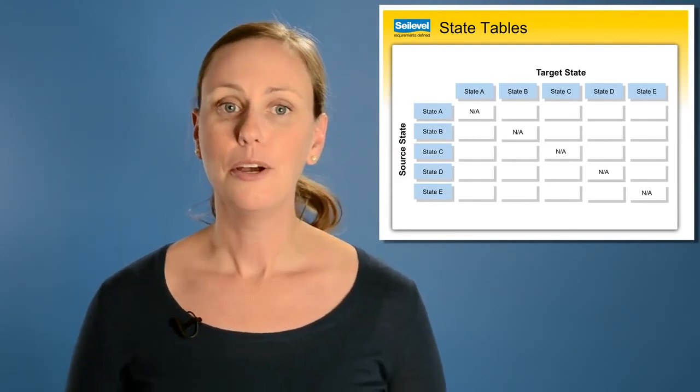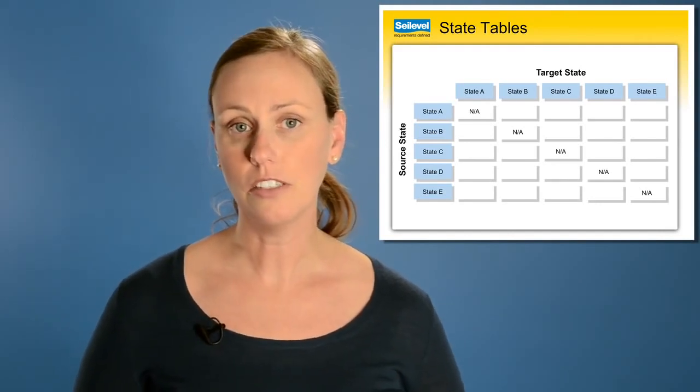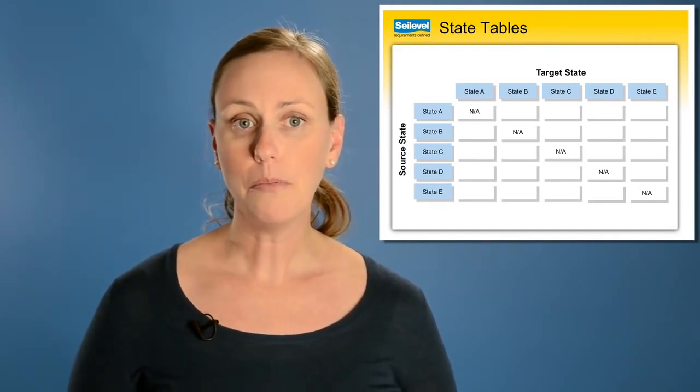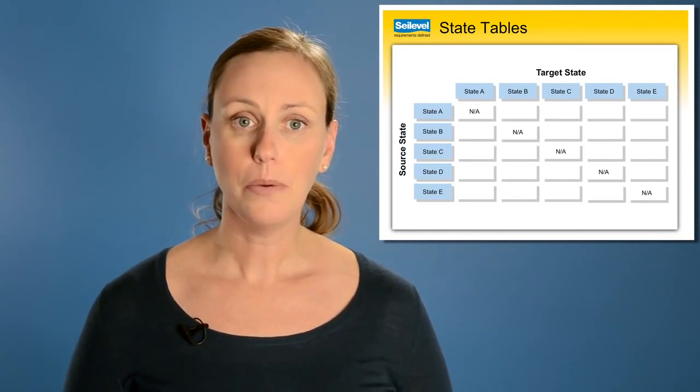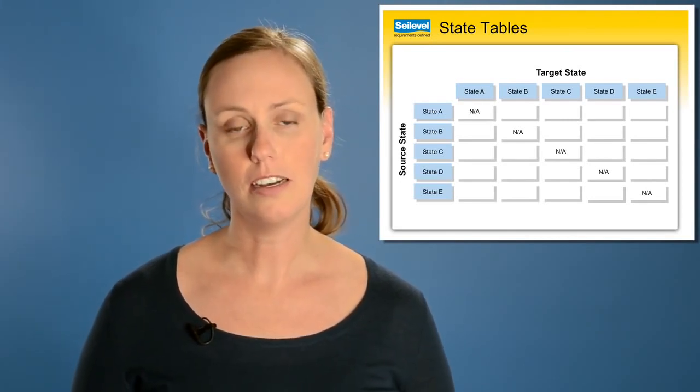Then, for each box in the grid, mark an X or a number in each of the intersection points of a valid state transition. For example, if you can move from state B to state C, you would put an X in the box where state B is the row name and state C is the column name.